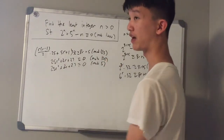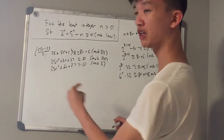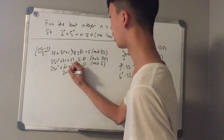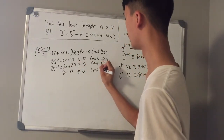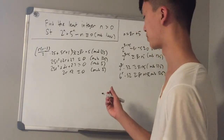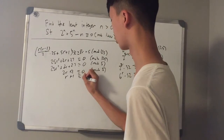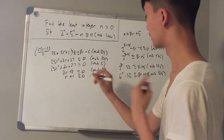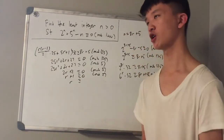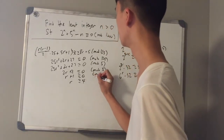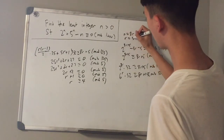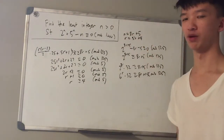We get 25r squared plus 2r plus 27 congruent to 0 mod 5. Since 25r squared is a multiple of 5 we can erase that term, and since 27 is congruent to 2 mod 5, we have 2r plus 2 is congruent to 0 mod 5. Since 2 and 5 are relatively prime, we can divide both sides by 2, giving r plus 1 is congruent to 0 mod 5, so r is congruent to negative 1, which equals 4 mod 5. We write r as 5s plus 4 for some natural number s.